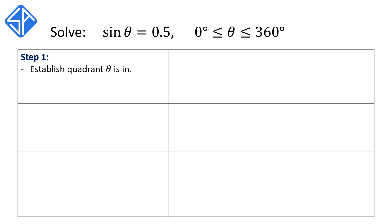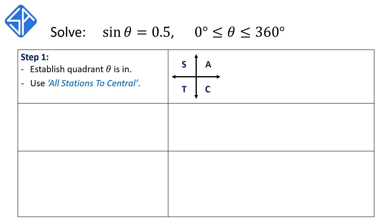The first step, we need to establish which quadrant theta is in, and we can do this using the acronym ALL STATIONS TO CENTRAL. This acronym helps us to memorize which trig function is positive in which quadrant. The A in the first quadrant tells us that all trig functions — sine, cos and tan — are positive in Q1. S in the second quadrant tells us that only sine is positive in Q2. T in the third quadrant tells us that only tan is positive in Q3, and C in the last quadrant tells us that only cos is positive in Q4.